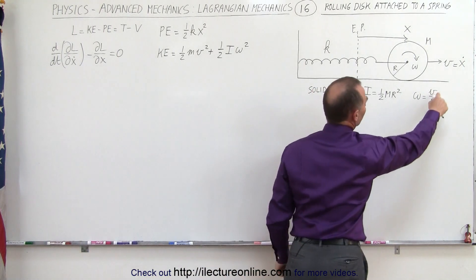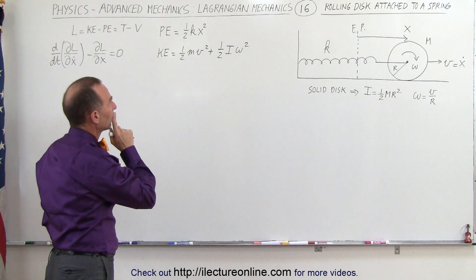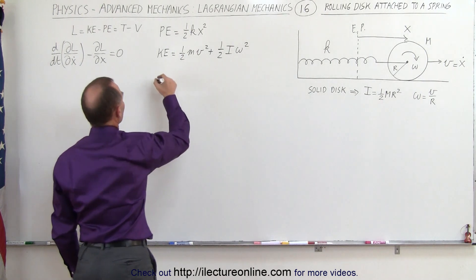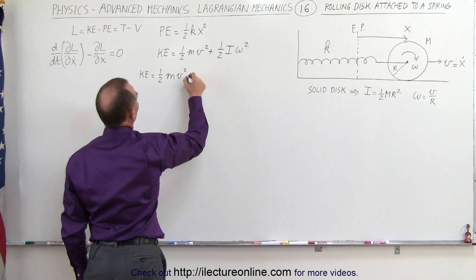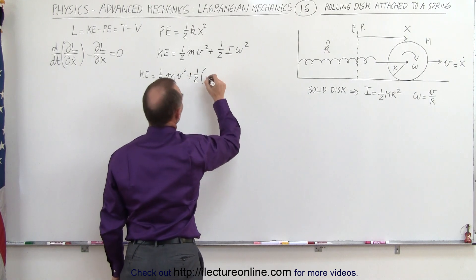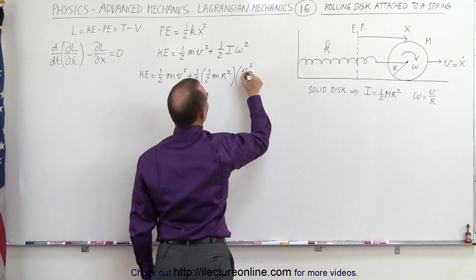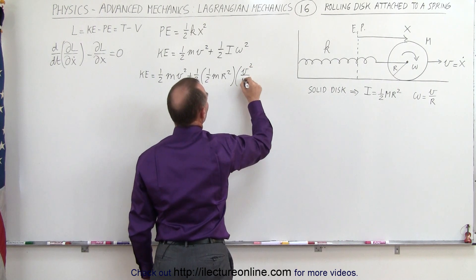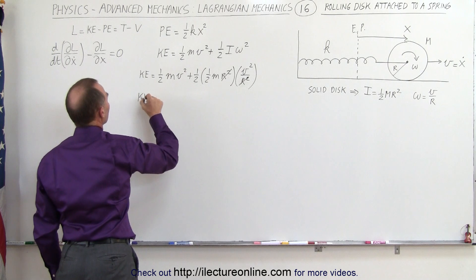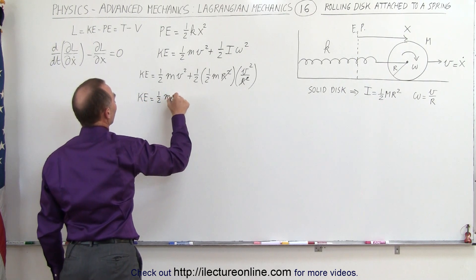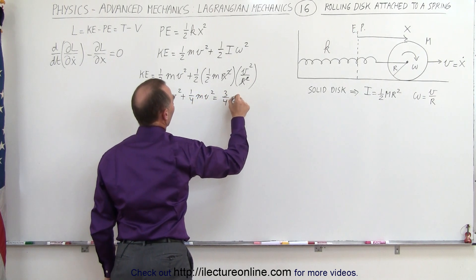Notice the relationship between the linear velocity, the angular velocity, and the moment of inertia of a solid disk. The kinetic energy is equal to one half times the mass times the velocity squared, plus one half times the moment of inertia — which is one half times the mass times r squared — times omega squared. Since omega can be written as v over r, this becomes v squared over r squared. The r squares cancel out, giving kinetic energy equal to one half mv squared plus one quarter mv squared, which equals three quarters mv squared.